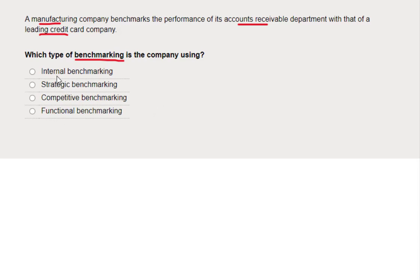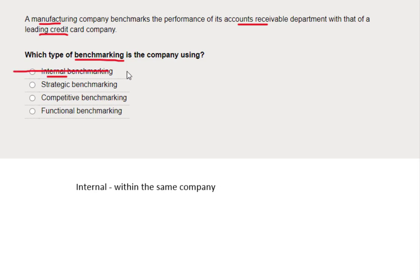Let's eliminate some wrong answers. Internal benchmarking — internal means inside, within the same company. That can't be right here, because it would mean comparing two divisions of the same business. We're a manufacturing company comparing against a credit card company — they're outside the company — so internal benchmarking cannot be right.